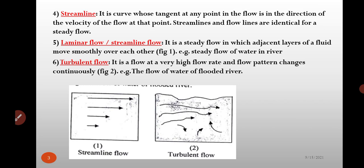Stream line flow is also called as a laminar flow. It is a steady flow in which adjacent layers of fluid move smoothly over each other.